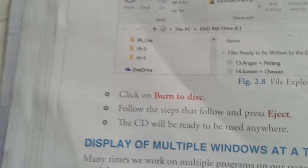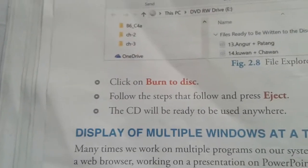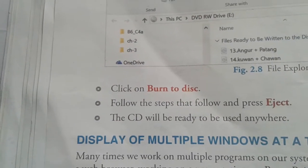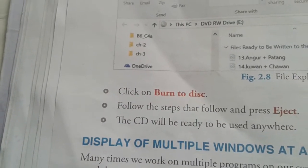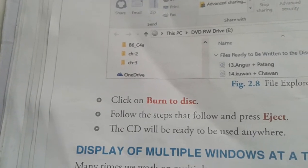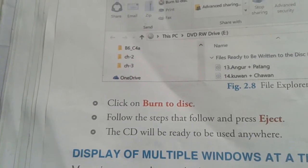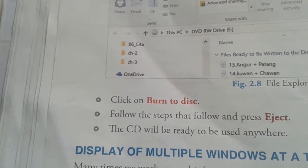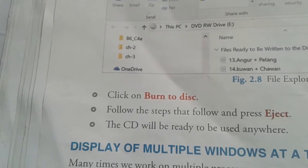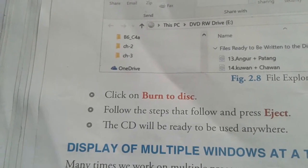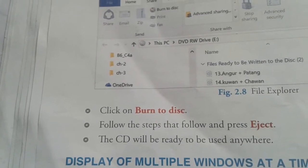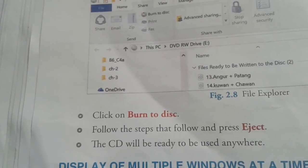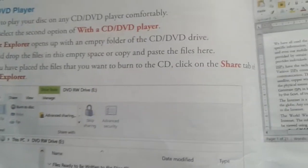Follow the steps and press Eject; the CD will be ready to be used anywhere. So why is it said that we burn a CD? Writing content in a compact disc or digital video disc is known as burning of CD or DVD. CD or DVD drives use laser beams to burn the information into the CD or DVD; hence it is termed as burning.